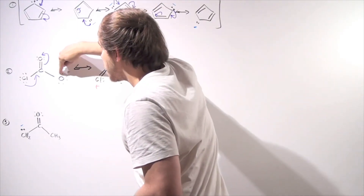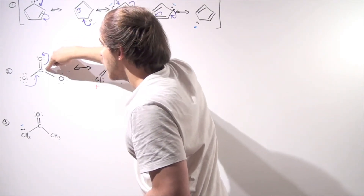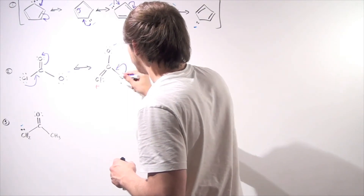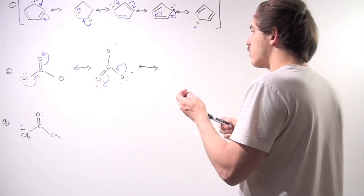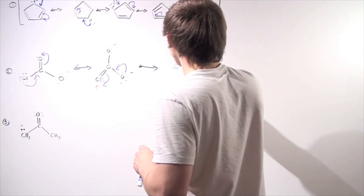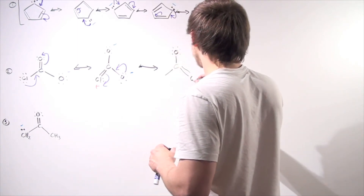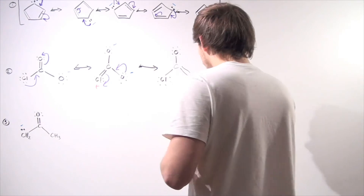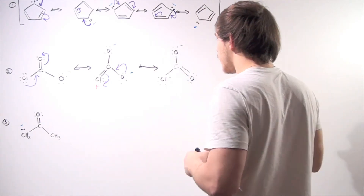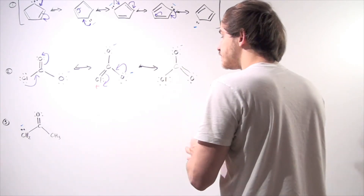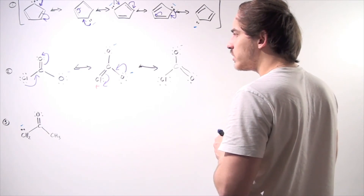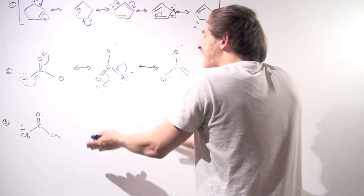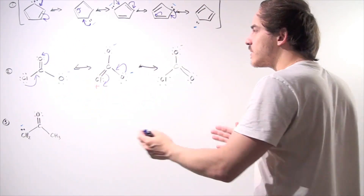For the next possible resonance form, we move this pair of electrons onto this, creating a carbon-oxygen double bond and displacing this pair of electrons. This creates a double bond displacing the previous double bond, forming the following molecule. We still have our negative charge on that oxygen, a double bond between this oxygen and carbon, and a single bond between chlorine and carbon. We have a negative charge here and no more charge anywhere else, so this will be a very stable resonance form.